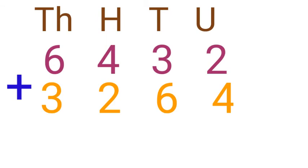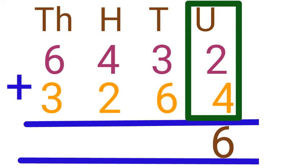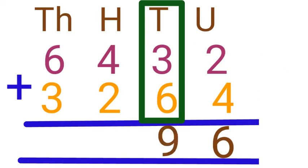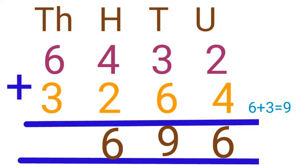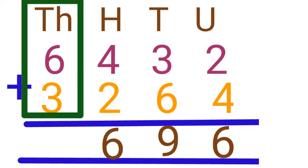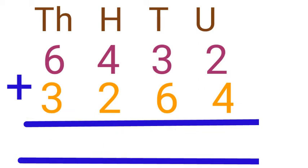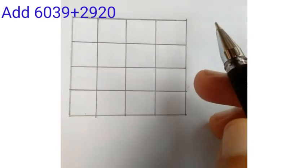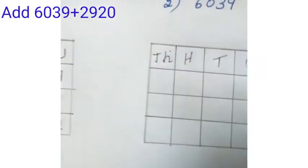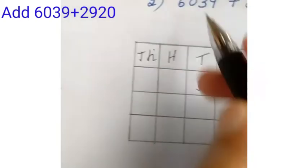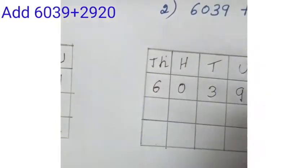Addition of four-digit numbers without carrying. Example 1: 6432 plus 3264. First, start from the right-hand side unit place: 2 plus 4 is equal to 6. Next, add the tens place: 3 plus 6 is equal to 9. Next, add the hundreds place: 4 plus 2 is equal to 6. Next, add the thousands place: 6 plus 3 is equal to 9. Therefore the total is 9696.